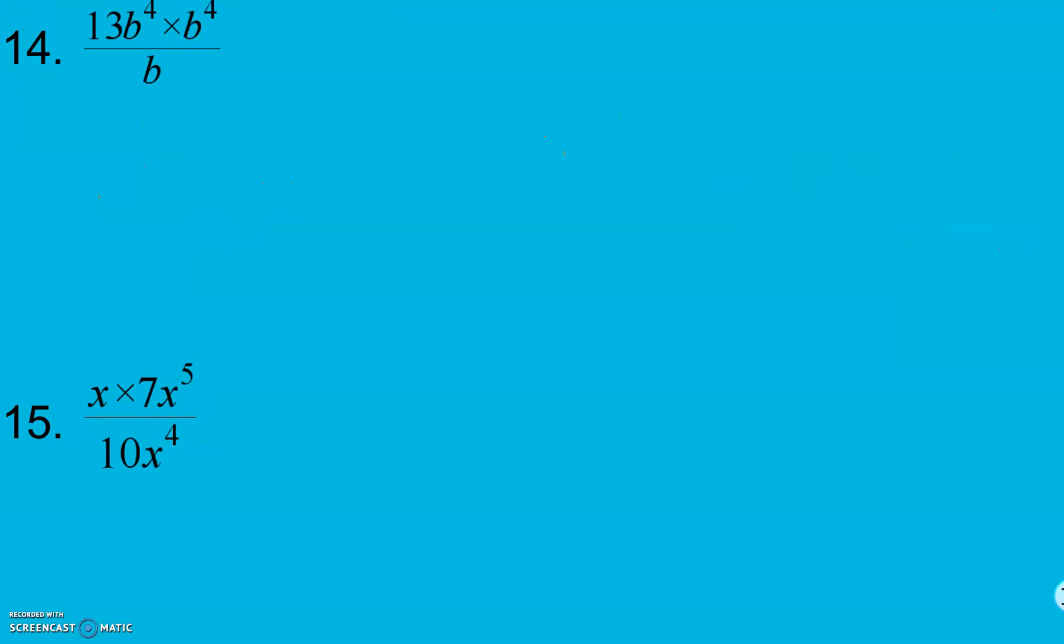Give 14 a try. In my numerator, I have 13 times b to the fourth times b to the fourth. In my denominator, I just have a b. So, my numerator is not as simple as I can get it. I can combine these b to the fourths.